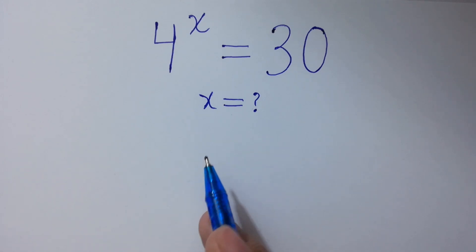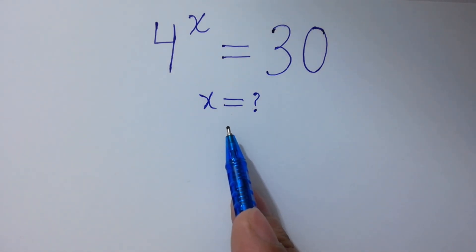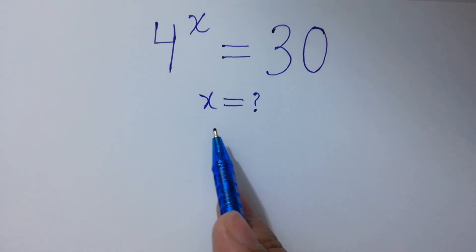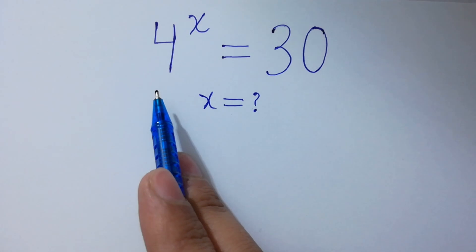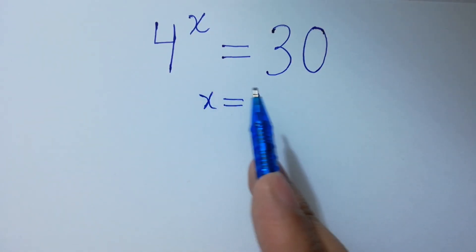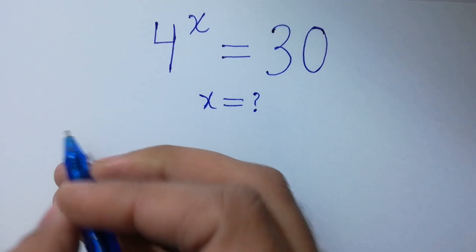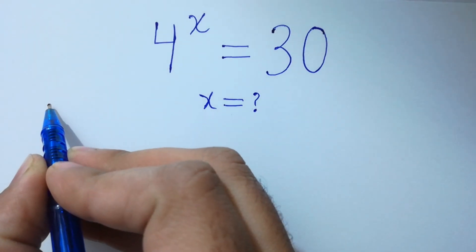Hello friends, find the value of x if 4 to the power x equals 30. Let's have a solution.